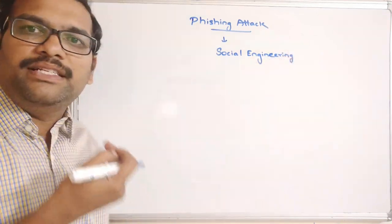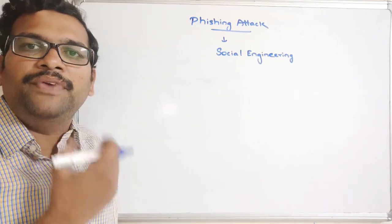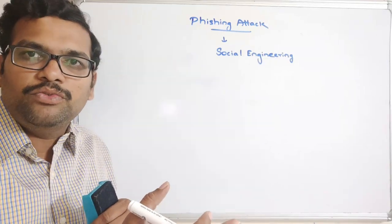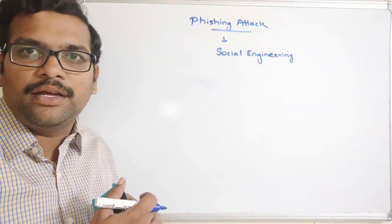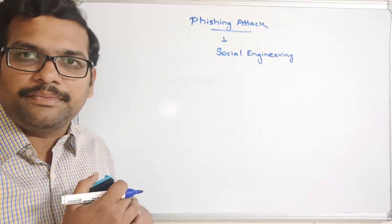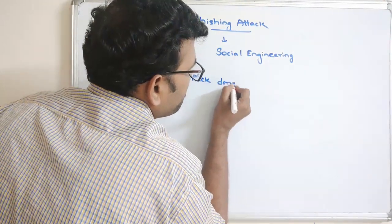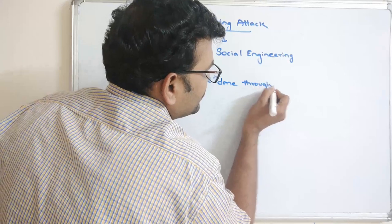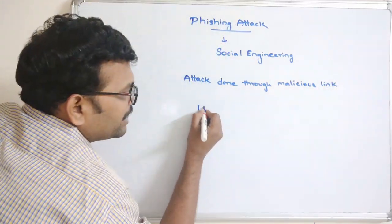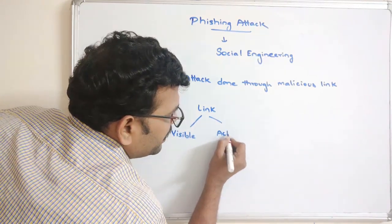Here the attacker will send malicious links through emails or SMS. Once the victim clicks on the link, the victim will be redirected to a webpage which is looking like a legitimate website, and the information entered will be transmitted to the attacker's system. The link can be of two categories: visible link and actual link.